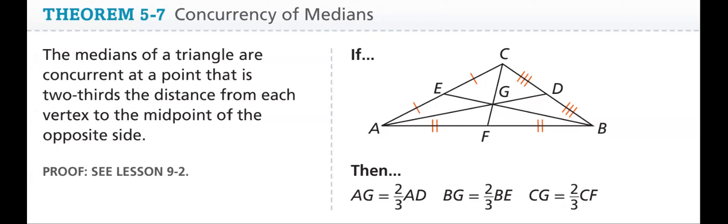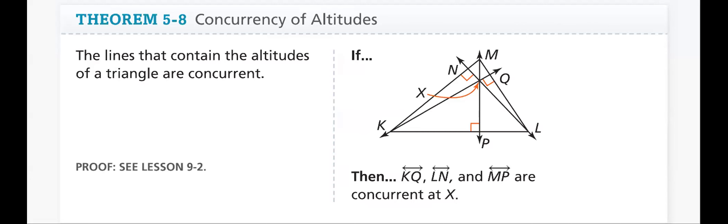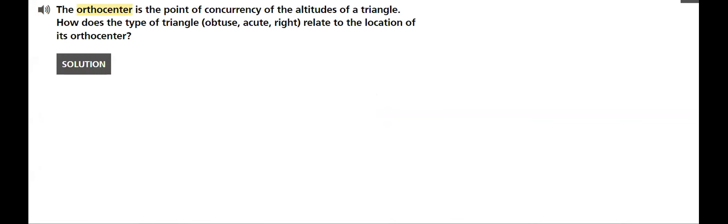We will also learn about concurrency of altitudes. The lines that contain the altitudes of a triangle are concurrent. They intersect at that point over there. That point of intersection is called the orthocenter. The orthocenter is the point of concurrency of the altitudes of a triangle.